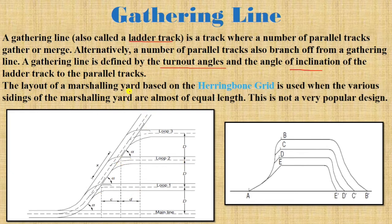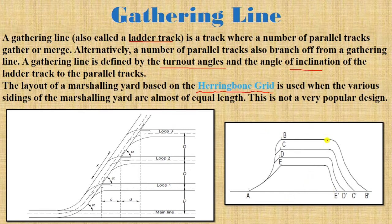The layout of a marshalling yard can be based on the herringbone grid. In the herringbone grid, tracks are arranged in a herringbone pattern and the sidings of the marshalling yard are of almost equal length. However, this is not a very popular design. The gathering line is what defines this yard layout.